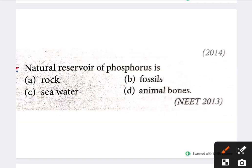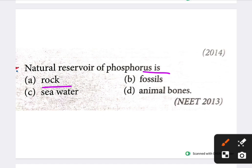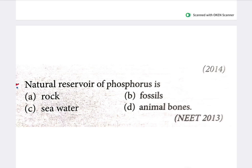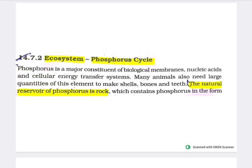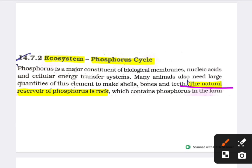Next question: the natural reservoir of phosphorus is which of the following? Options are rock, fossils, sea water, and animal bone. The answer is rock. The natural reservoir of phosphorus is rock.